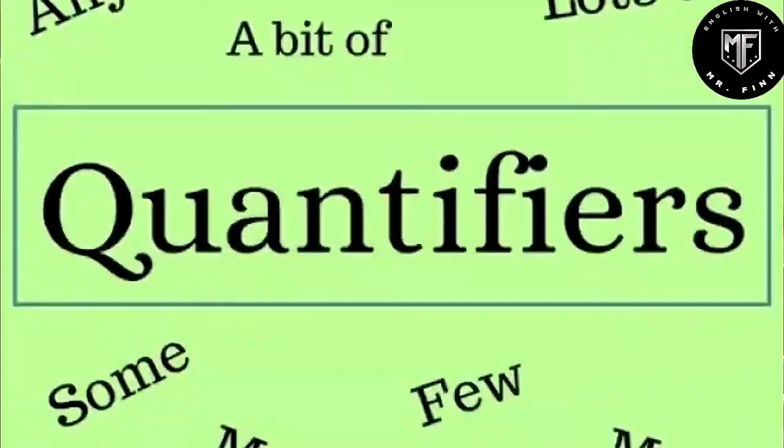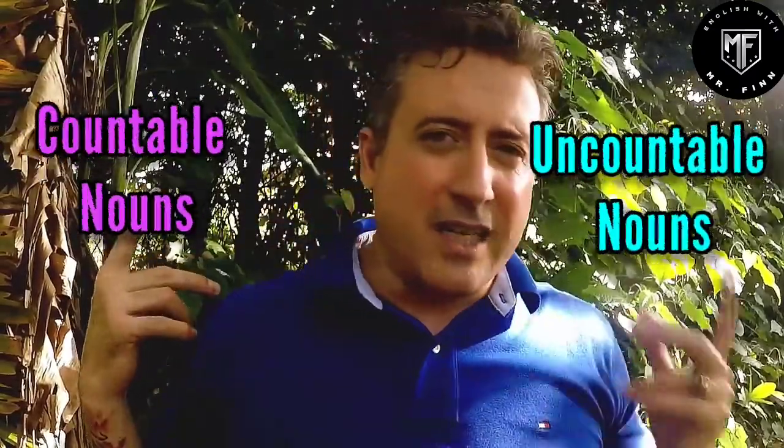What I want to talk about is one of the things that's really important when we're dealing with nouns, and that is: what are the quantifiers that we use? Many English learners have difficulties — not necessarily with uncountable and countable nouns, nor with regular or irregular nouns — but many have difficulty when it comes to the quantifiers. A quantifier is a word that gives us the quantity of the noun we're talking about.